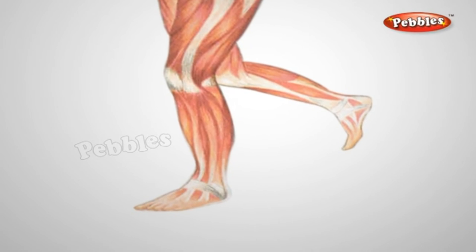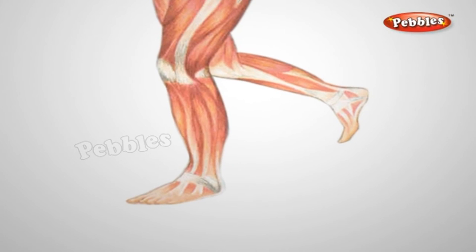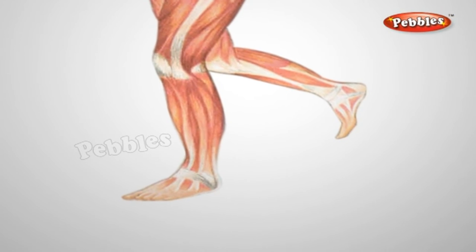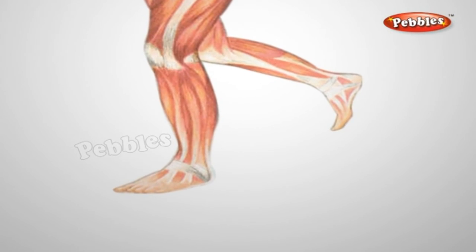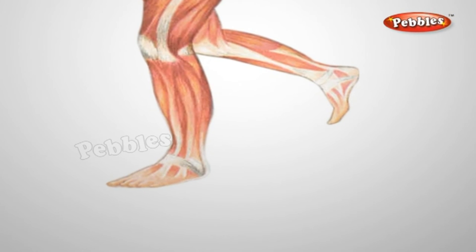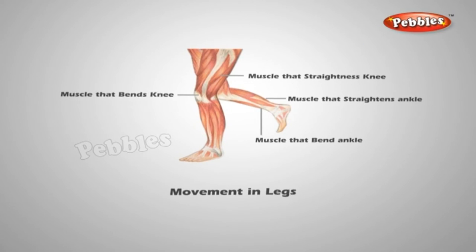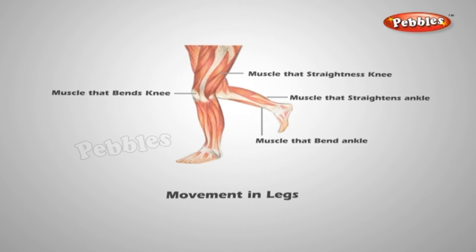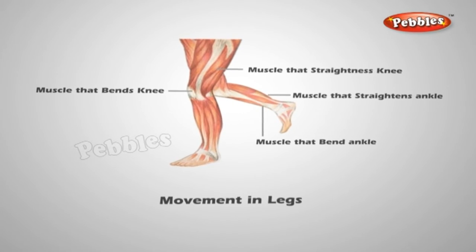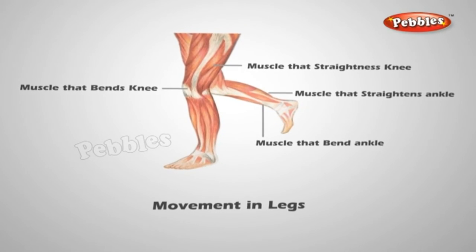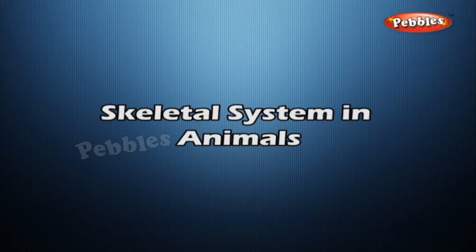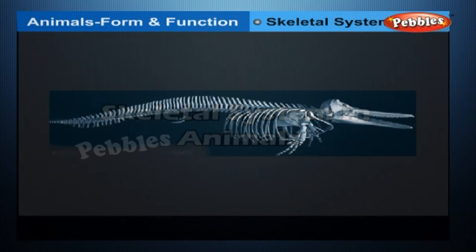Activity: Run some distance and observe the movement in the legs that takes you forward. When you run, your legs alternately bend and straighten at the knees and ankles. Your thigh and hamstring muscles bend and straighten your knee joint, and your calf and shin muscles bend and straighten your ankle joint.